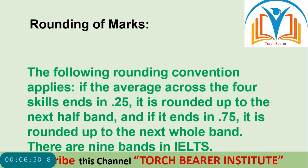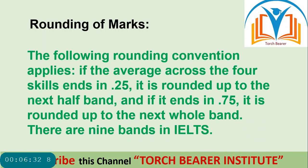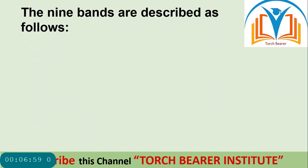Rounding of marks: the following rounding convention applies. If the average across the four scales ends in 0.25, it is rounded up to the next half band. And if it ends in 0.75, it is rounded up to the next whole band. There are nine bands in IELTS.